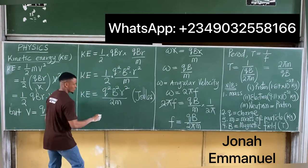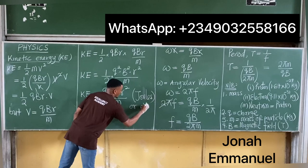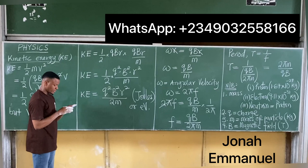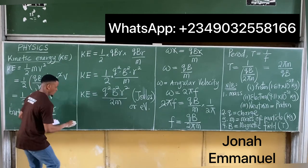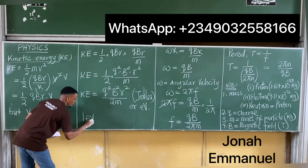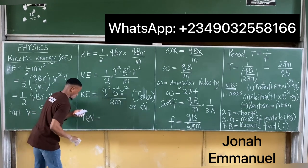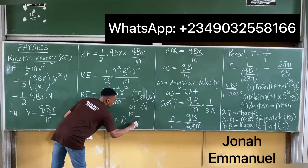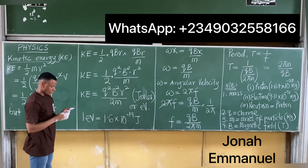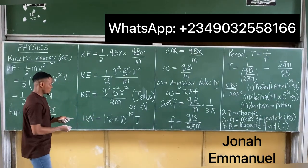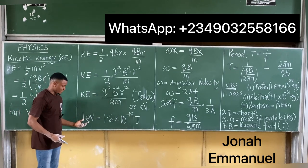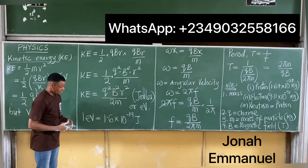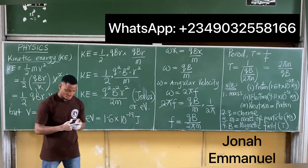Kinetic energy is in joules or electron volts (eV). The relationship between electron volts and joules is: 1 eV = 1.6×10⁻¹⁹ joules. You can use this relationship to convert between the two units.